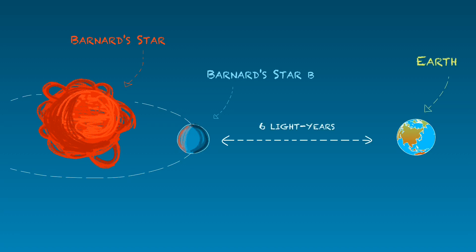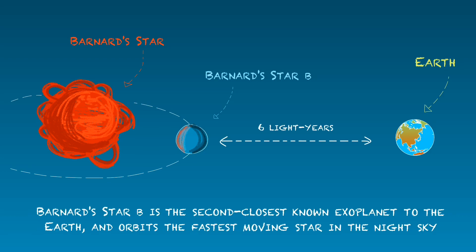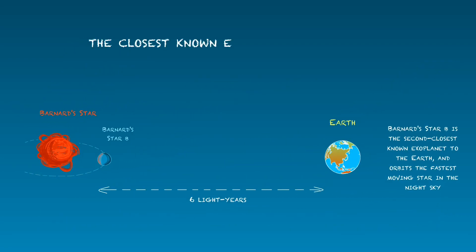The planet, designated Barnard's star B, is the second closest known exoplanet to the Earth and orbits the fastest moving star in the night sky. The only stars closer to the Sun make up the triple star system Alpha Centauri.